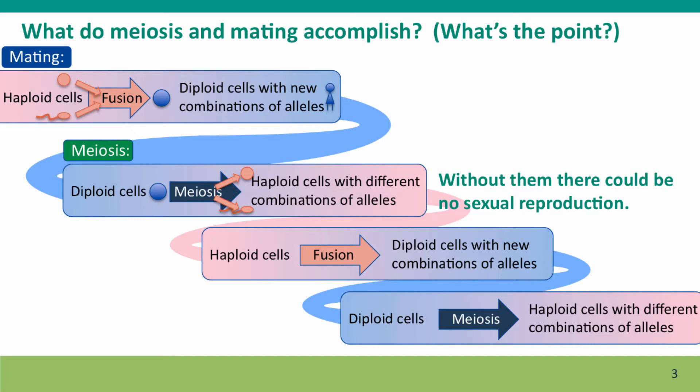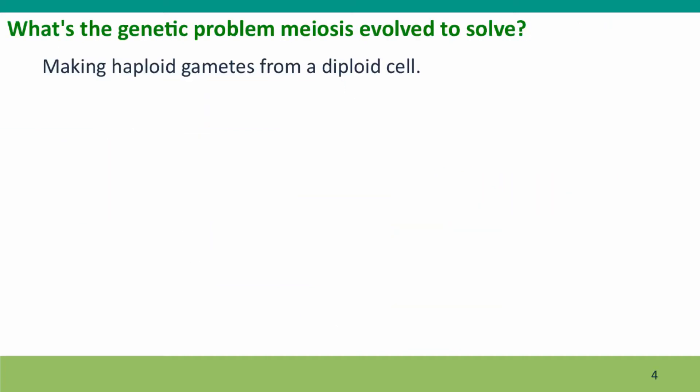This is a reminder of what meiosis and mating accomplish — in particular, that meiosis takes a diploid cell and produces haploid cells with new combinations of alleles but still complete sets of genetic information. So the genetic problem that meiosis evolved to solve is making haploid gametes from a diploid cell. Just as mitosis does, it has to make sure those gametes get a complete set of chromosomes — a haploid set rather than the two sets that were in the parent cell.